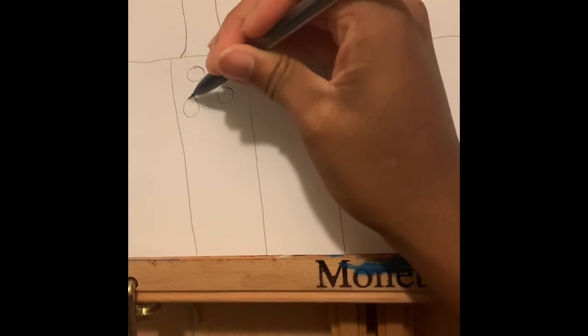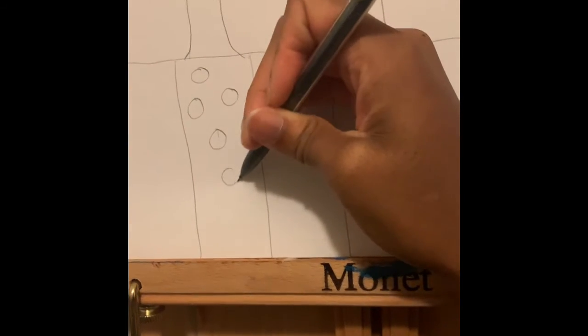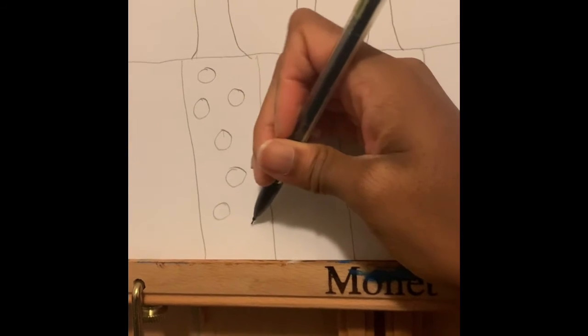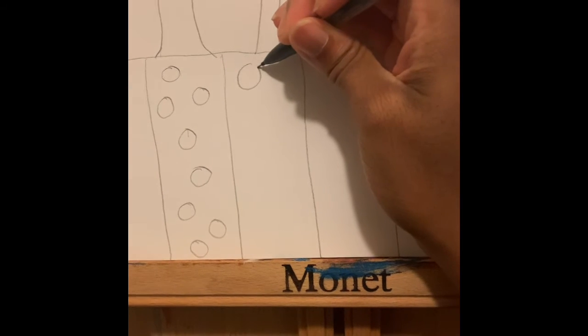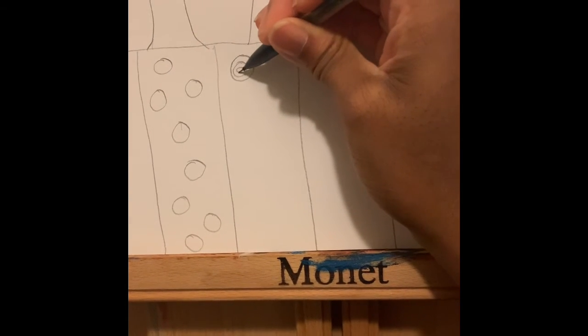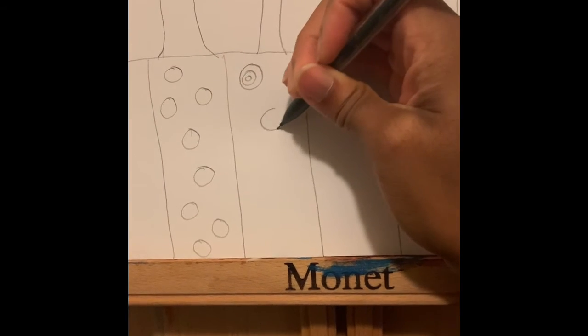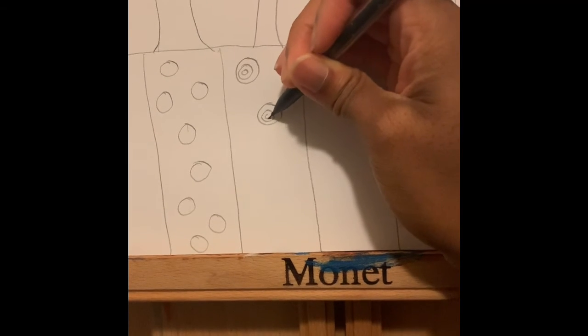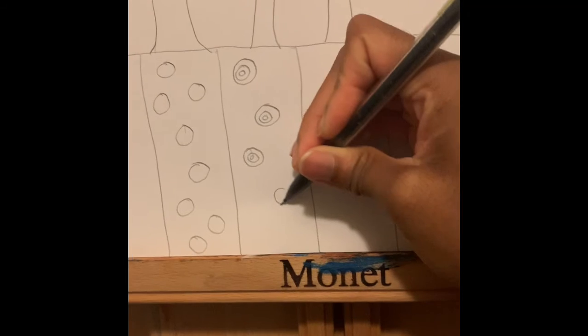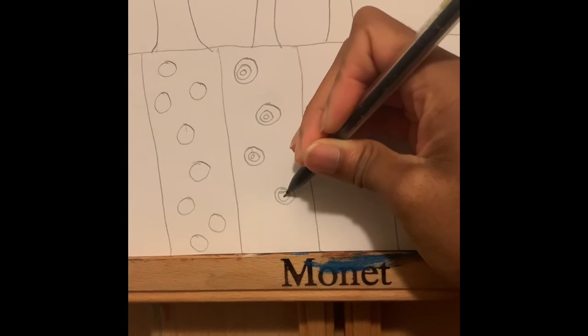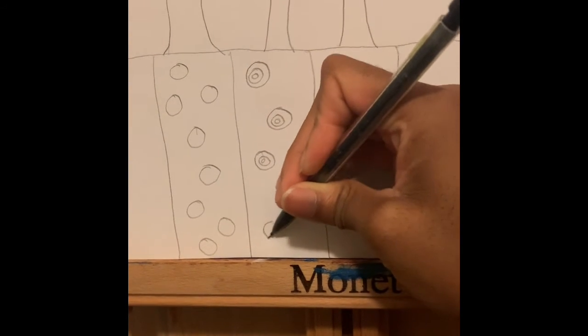So you can choose to do them as polka dots, you can choose to do many circles wrapped around each other like this. You can have them be close together or far apart from each other. That is your choice.